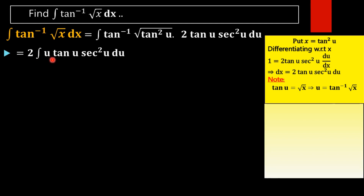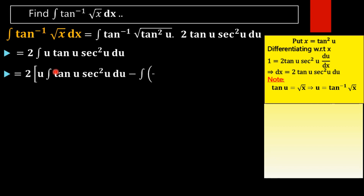Now we apply integration by parts. We take u as the first function and tan(u)·sec²(u) as the second function (v). Applying integration by parts gives: u·∫v·du minus ∫(derivative of u)·(∫v·du)·du.